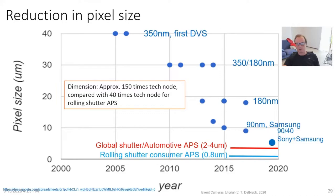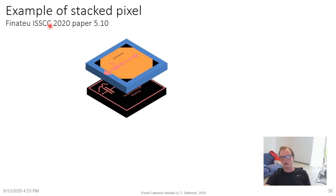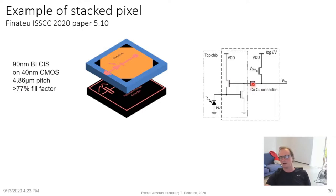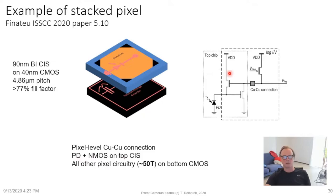A remarkable example of stacked image sensor technology: the Prophesee–Sony ISSCC 2020 paper reports a stacked DVS pixel where the top layer has the photodiode and MOS transistors (in 90 nm back-illuminated CIS technology) and the bottom layer has all other circuitry (in 40 nm CMOS digital/mixed-signal). They achieve a 4.86 micron pitch with more than 77% fill factor, using copper-copper pixel-to-pixel connections — the photodiode plus nFET and pFET on the top CIS, and all other pixel circuits (about 50 transistors) on the bottom CMOS.